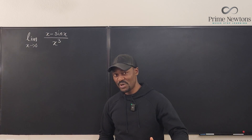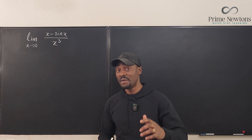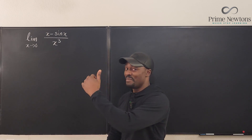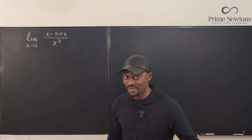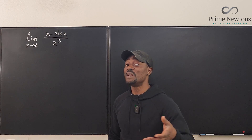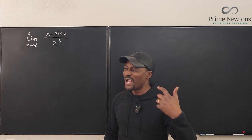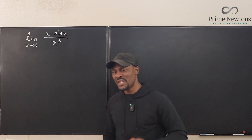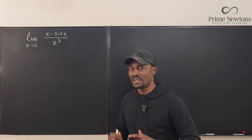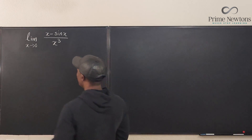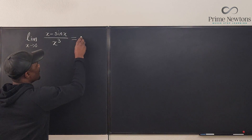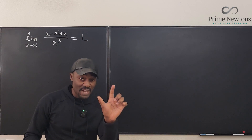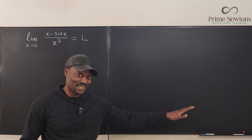The first thing we're going to do is assume the limit exists, because if it doesn't, many of the things we're going to do will be illegal. We're going to assume the limit exists — and I know it's 1/6. How do we get 1/6 using just algebra and trig? Let's say this is L. That's the limit. We don't know the value of L yet, but we should get 1/6 at the end.